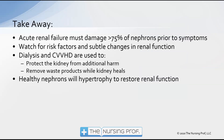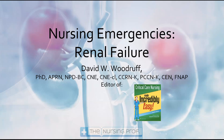Key takeaways: acute renal failure must damage about 75% of the nephrons before symptoms occur, so don't count on symptoms first — look for changes in GFR. Watch for risk factors and subtle changes in renal function. Dialysis and CVVHD (continuous venovenous hemodialysis) are used to protect the kidney from additional harm and remove waste products. Healthy nephrons will hypertrophy to maintain renal function, which is why damage often goes undetected until nearly all renal function has decreased. Thank you for joining me for Nursing Emergencies: Renal Failure. My name is David Woodruff — until next time, bye now.